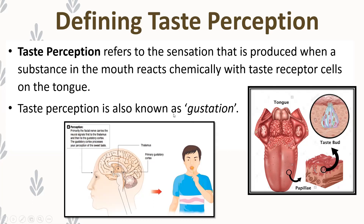Taste perception is also known as gustation. Whenever we talk about gustation, gustatory cells, or gustatory perception, we're simply talking about taste perception. As mentioned when looking at the lobes of the brain, taste perception is mainly handled by the frontal lobe, specifically a small area called the primary gustatory cortex.